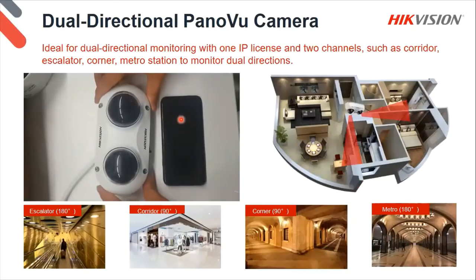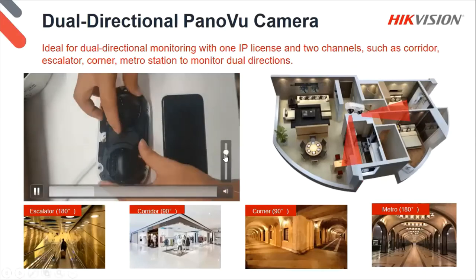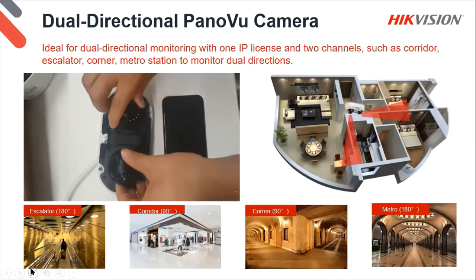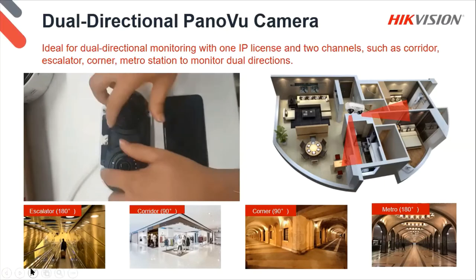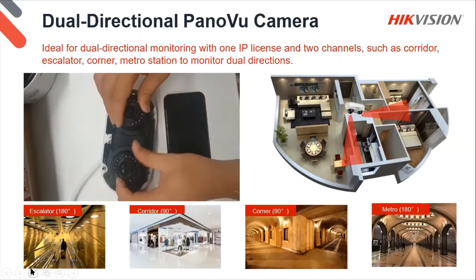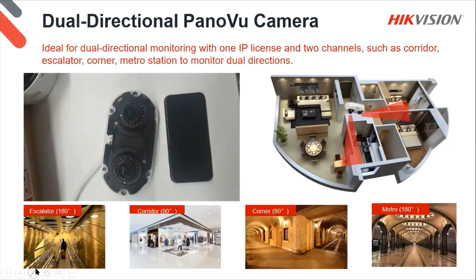These are actually quite small units — not very obtrusive — and they can look in any direction. You install it on the corner itself: one camera looks down one way, the other looks down the other way. A great use case — small camera, fantastic 5 or 8 megapixel on each lens.